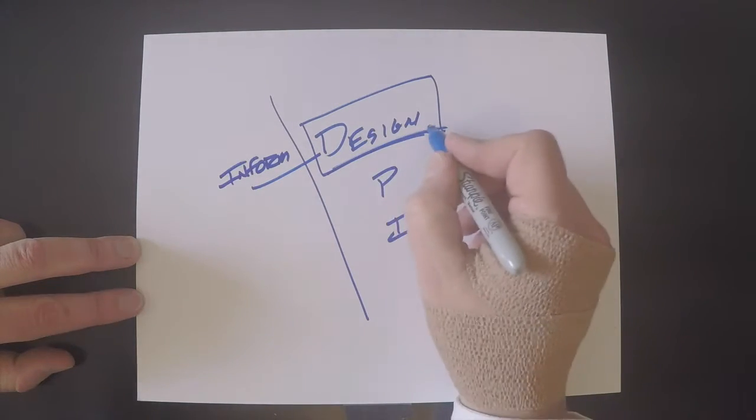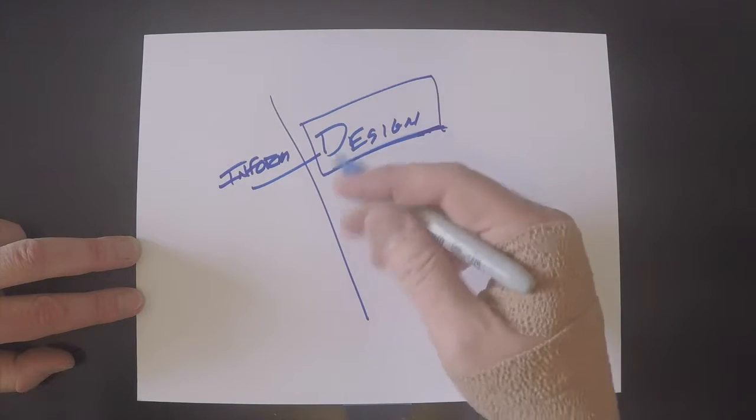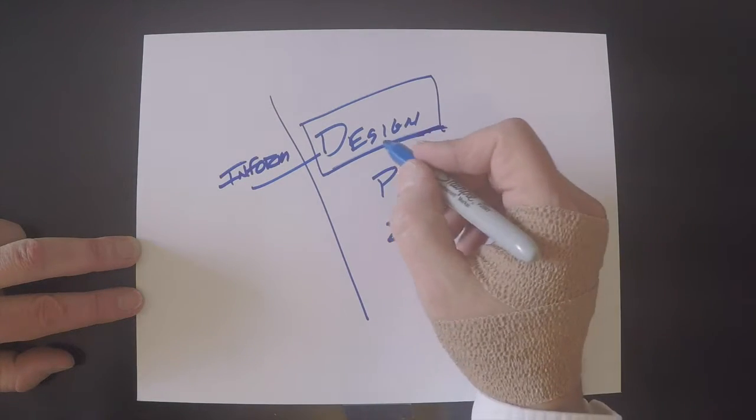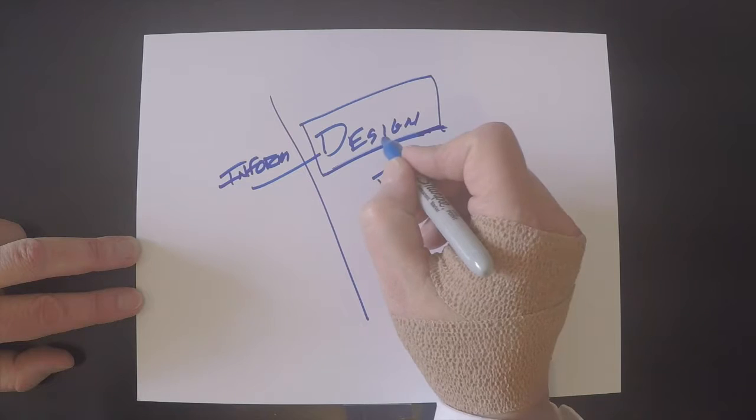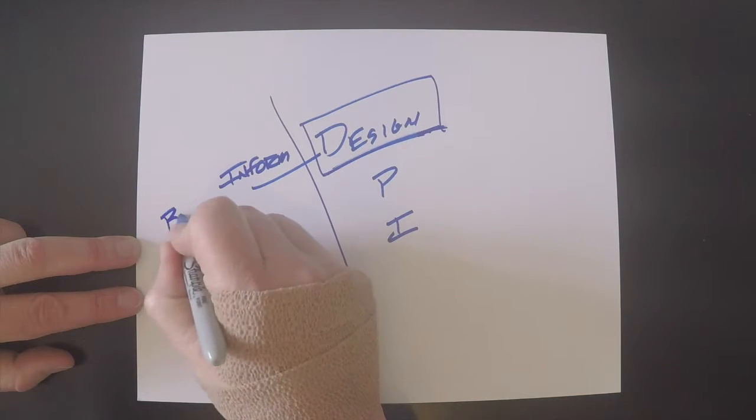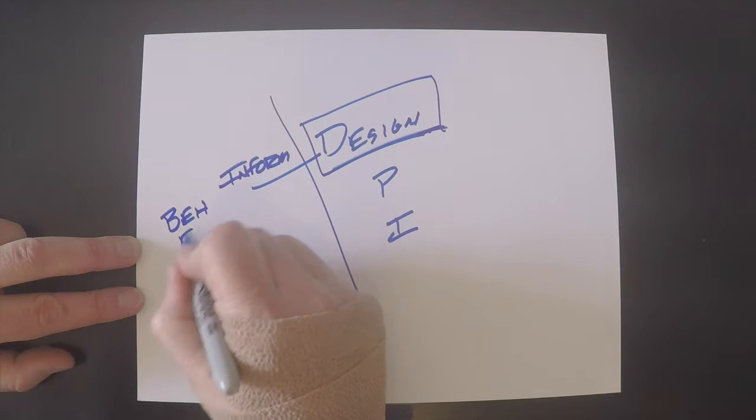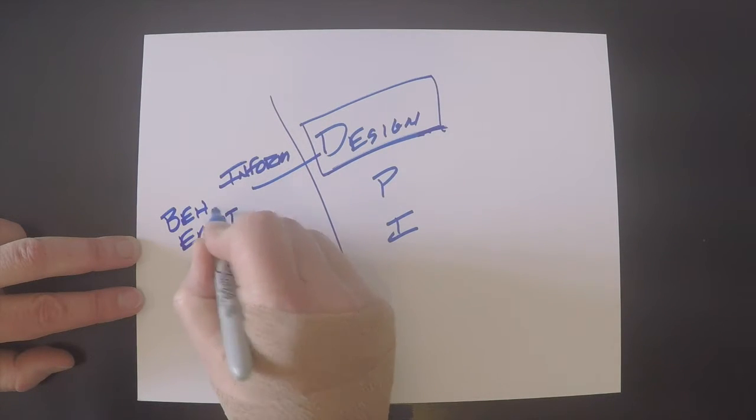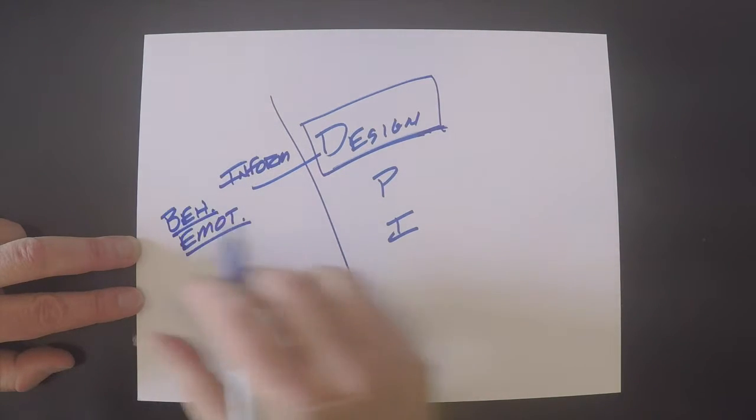That's okay and you can get some decent kind of iterative designs out of that. However, if you really want something special, the magic here is if you inform that with behavior and emotion. So these are the two things that are the crux of design.